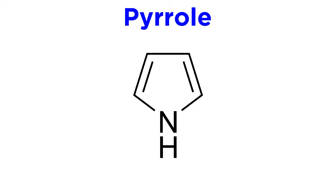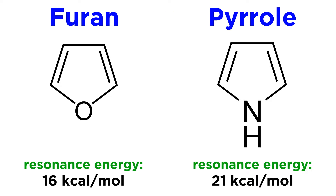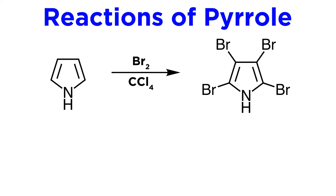Finally, we have pyrrole, which is again similar to furan, just with a nitrogen atom instead of oxygen, which is bound to a hydrogen atom. With a resonance energy of 21 kcal per mole, its reactivity is similar to that of furan, typically reacting at carbon 2. For example, pyrrole tetrabrominates easily, making the monobromination product difficult to attain even at low temperatures.